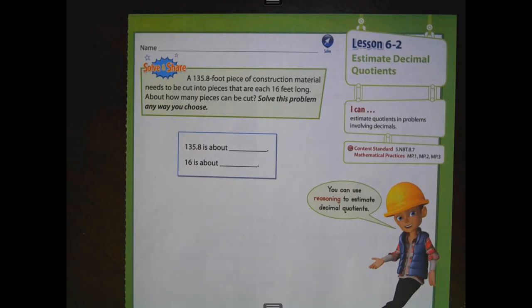One thing it does, it helps us know if our quotient or our answer to a division problem is reasonable. Another thing it helps us do is it helps us place the first digit in our quotient. So it is well worth the time to practice this concept. Go ahead and flip over to page 308.